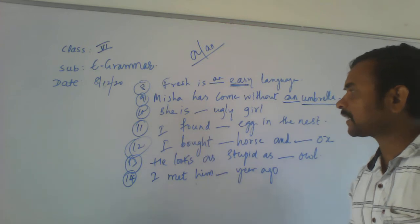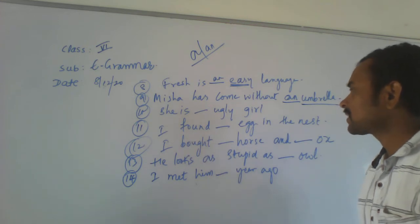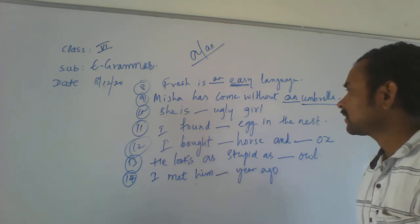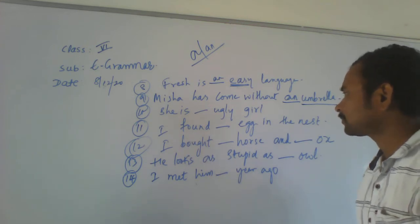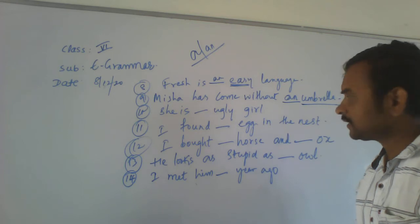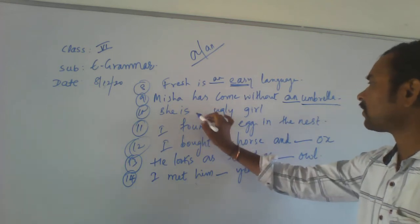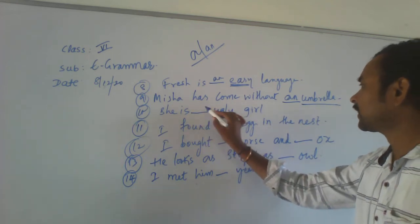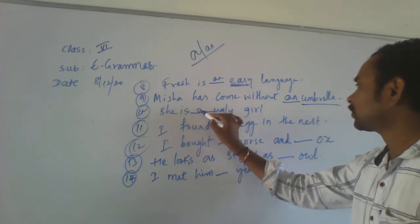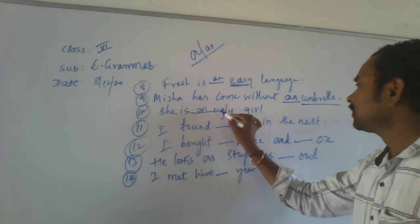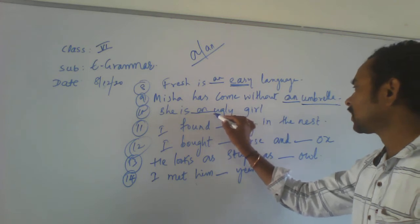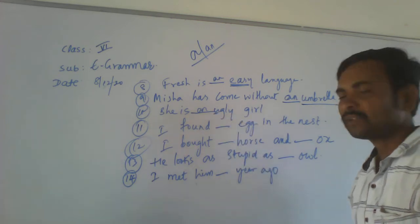Let's come to the 10th one. She is a blank ugly girl. What article do you have to write here? AN, because this word starts with a vowel — U. So, she is an ugly girl.